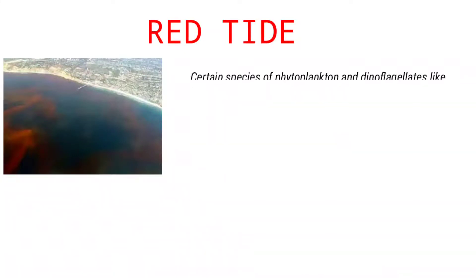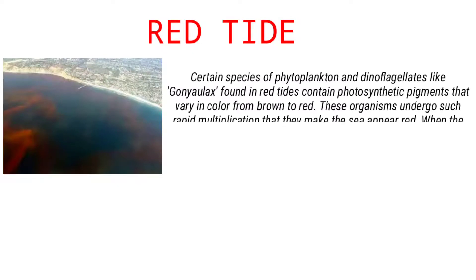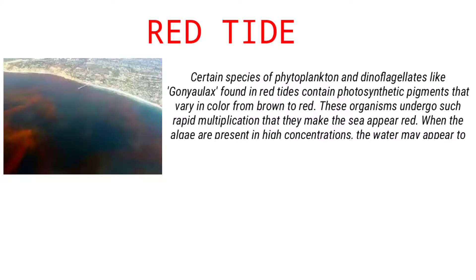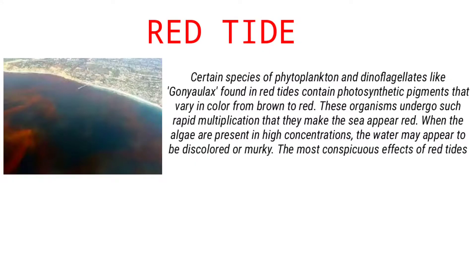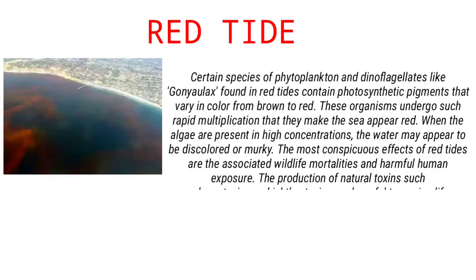Certain species of phytoplankton and dinoflagellates, like Gonyaulax, found in red tides contain photosynthetic pigments that vary in color from brown to red. These organisms undergo such rapid multiplication that they make the sea appear red.